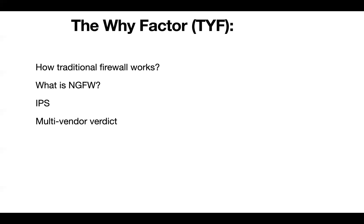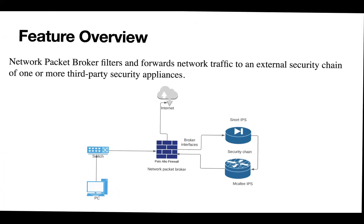That's why the Network Packet Broker functionality comes in. In this diagram, when a client tries to access the internet, traffic goes to the switch, then to the firewall, and out to the internet — with return traffic following the reverse path. With Network Packet Broker, there are three additional components: the broker interfaces, the network packet broker (which is the firewall itself), and the security chain — the list of IPS devices traffic must pass through before reaching its destination.